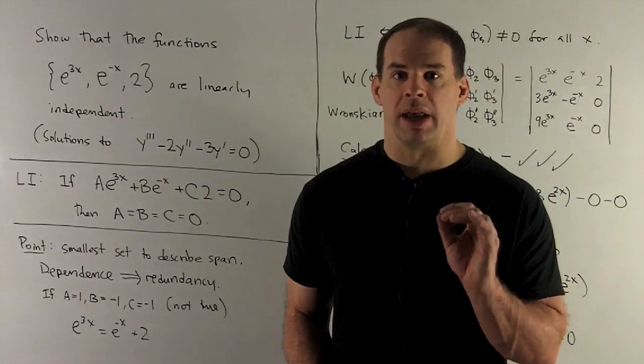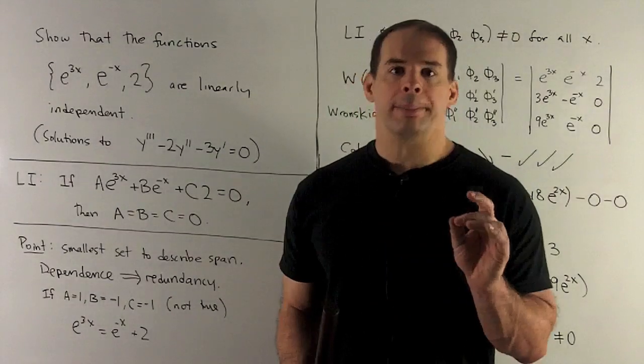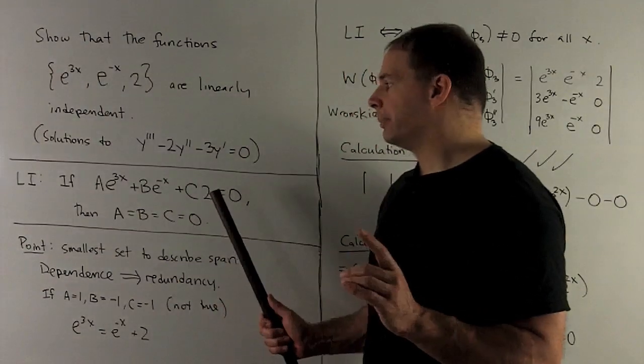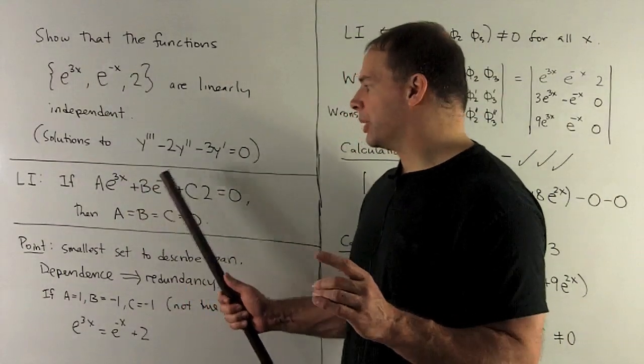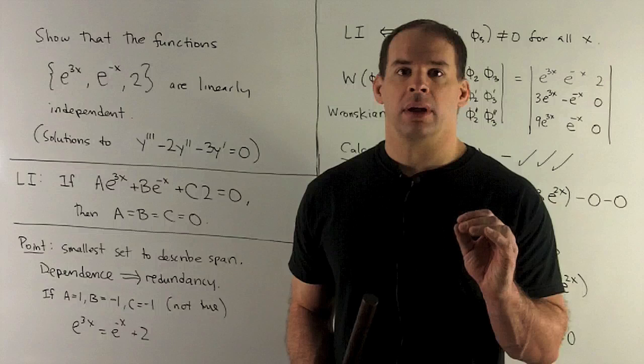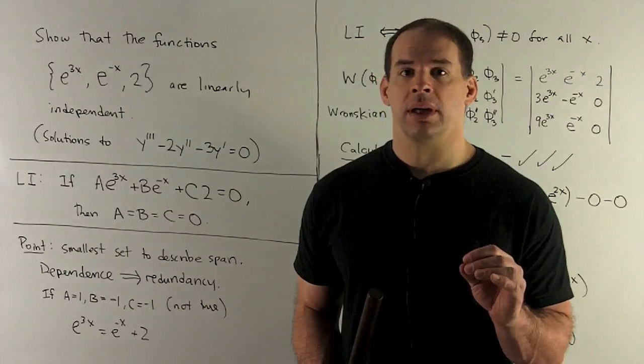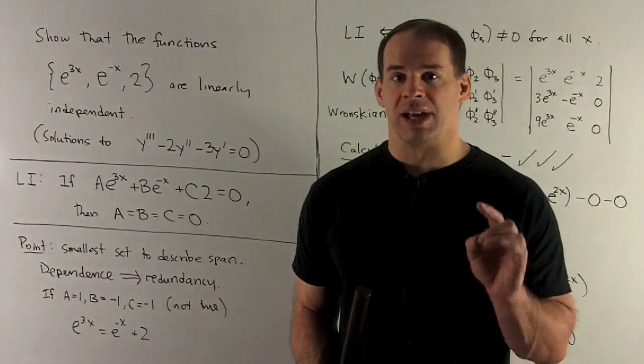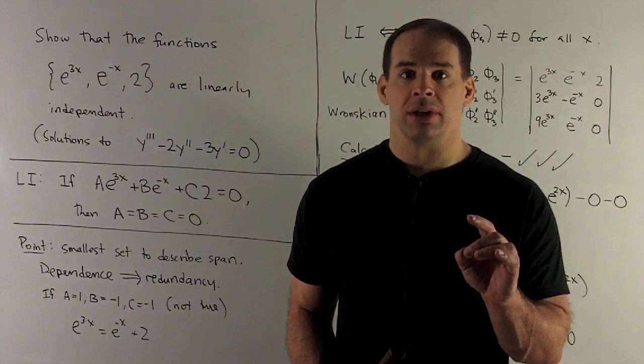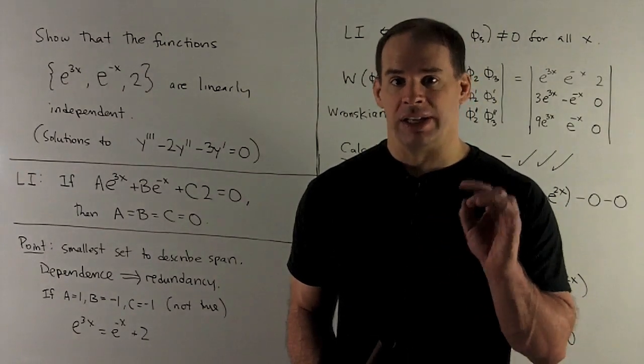First, linearly independent. So what's it mean for our three functions to be linearly independent? We start by taking all linear combinations. We take numbers a, b, and c. We take a times e^(3x) plus b times e^(-x) plus c times 2, set that equal to 0. Then we solve to find all a, b, and c where this equation is true. If I can find a, b, and c with one of them non-zero, we call our set linearly dependent. If the only solution is a = b = c = 0, we're guaranteed at least that one, then we'll have linearly independent.